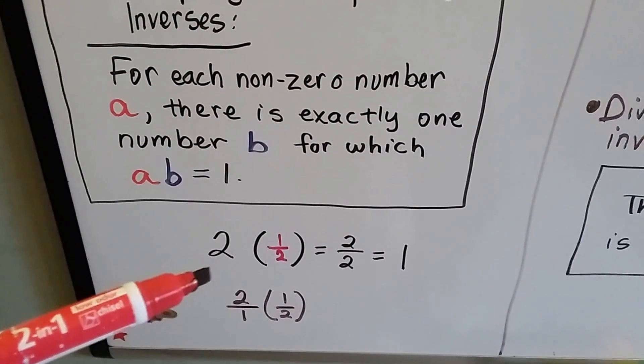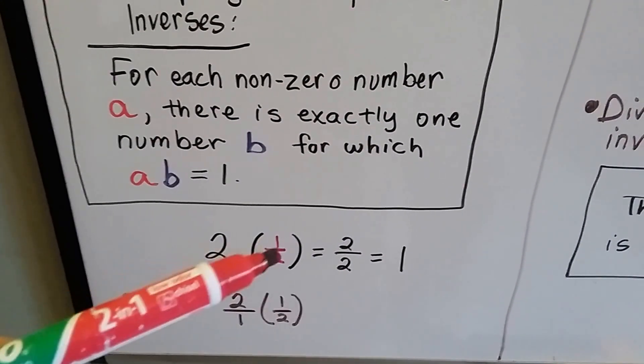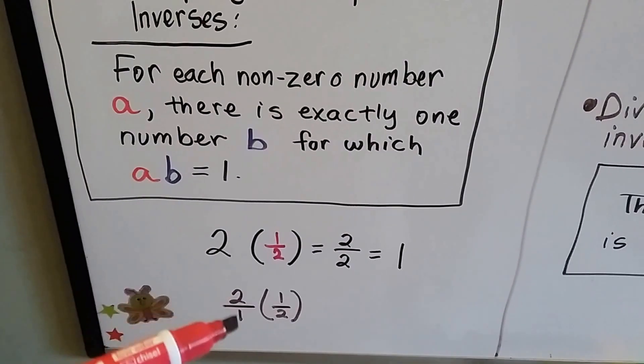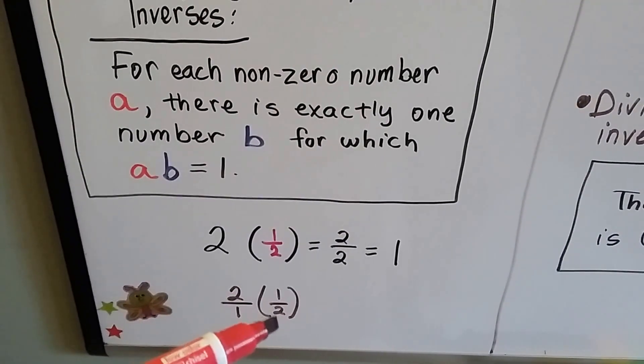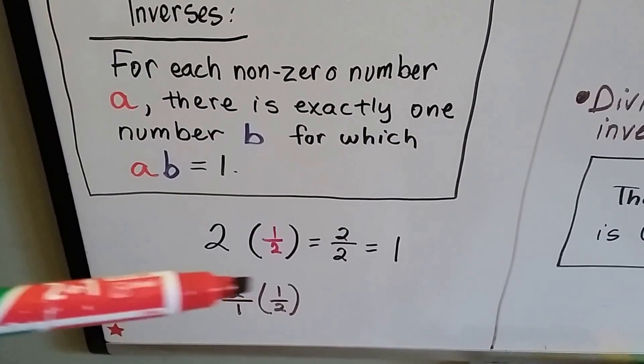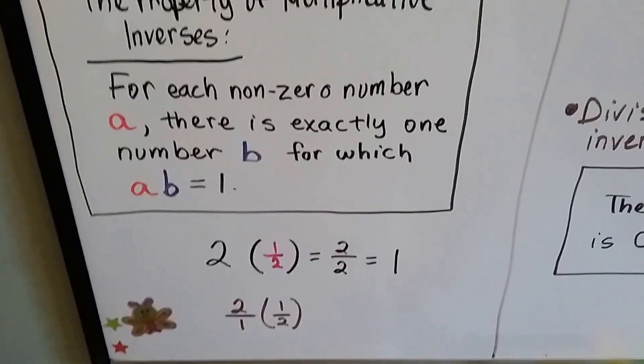If we have a 2, we can flip this upside-down as 1 half, because 2 can be written as 2 over 1. And its reciprocal is 1 half, its multiplicative inverse, so we get 2 over 2, which is equal to 1.